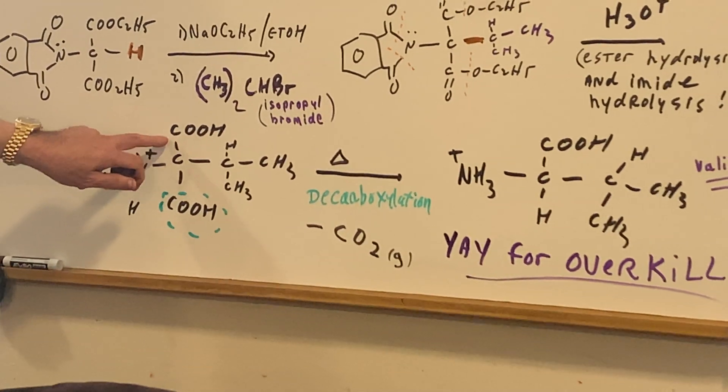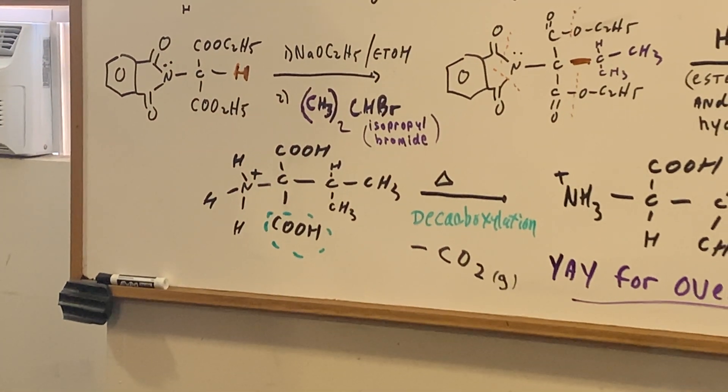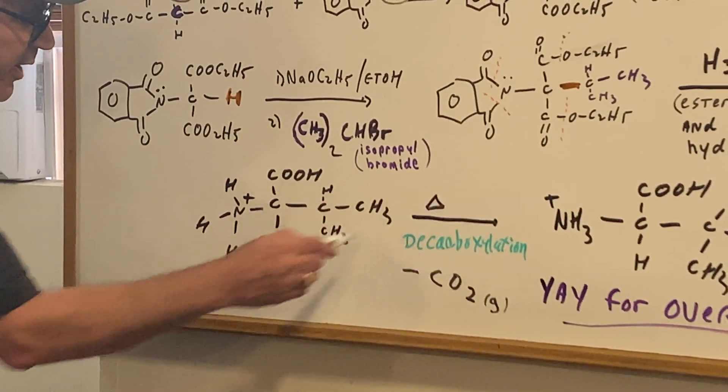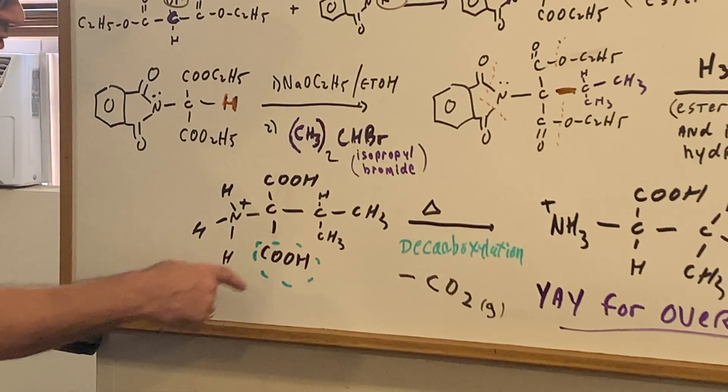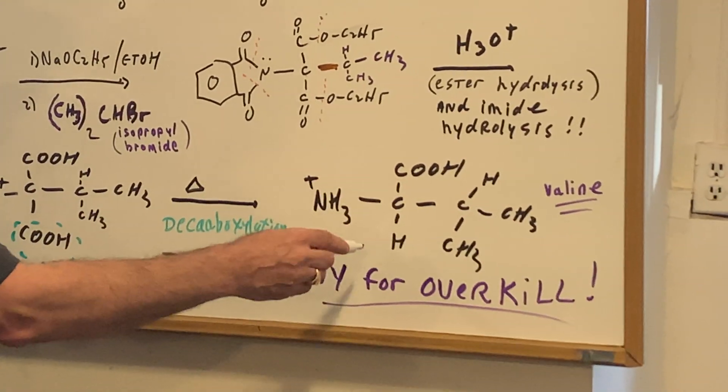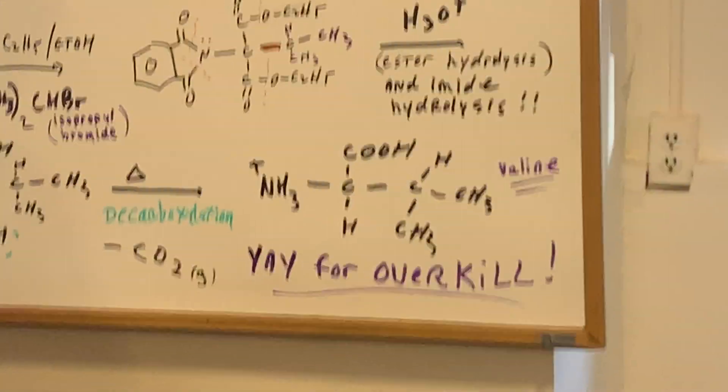If you remember, we never want to have two carboxy groups on the same carbon. So we're going to heat it. We decarboxylate it. We take one of the COOH groups off to give CO2, and you're left with the amino acid valine.